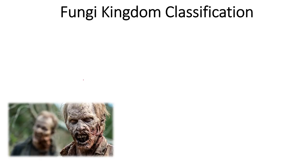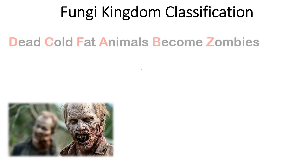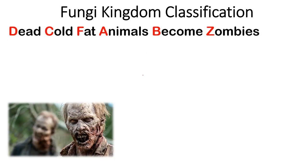The only thing you need to remember here is scary zombies and animals turning into zombies. Let's look at the sentence: 'Dead cold fat animals become zombies.' It's something you can remember for a long time, and the letters D, C, F, A, B, and Z will give us the fungi kingdom classifications.